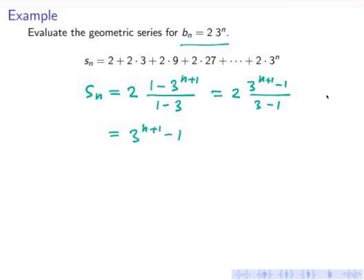So it turns out to be a very simple formula. Let's look at the first few terms. S_0: if I substitute n equals 0, then I get 3 to the 1 minus 1, which is 2, and this is exactly the 2 from here.